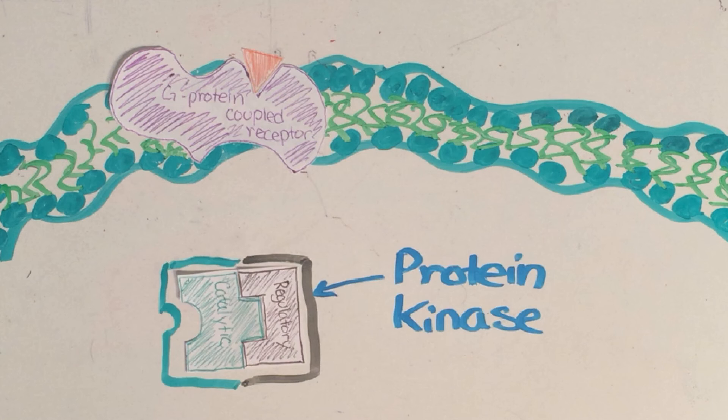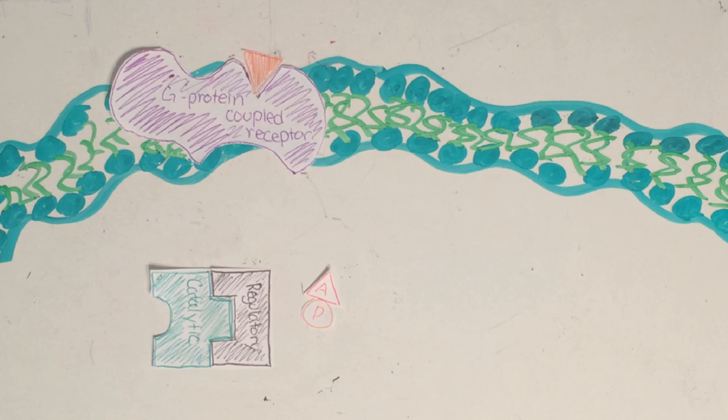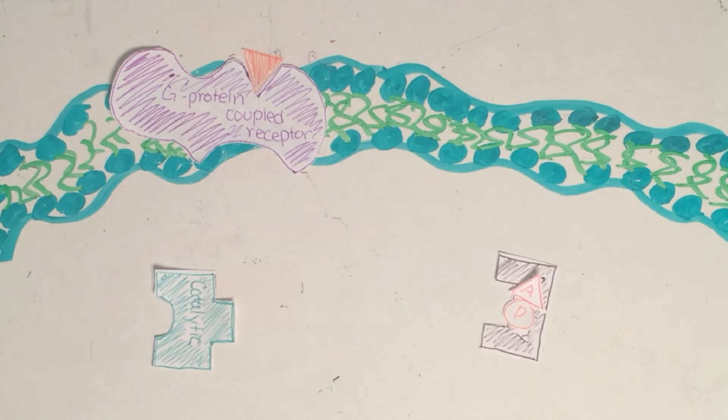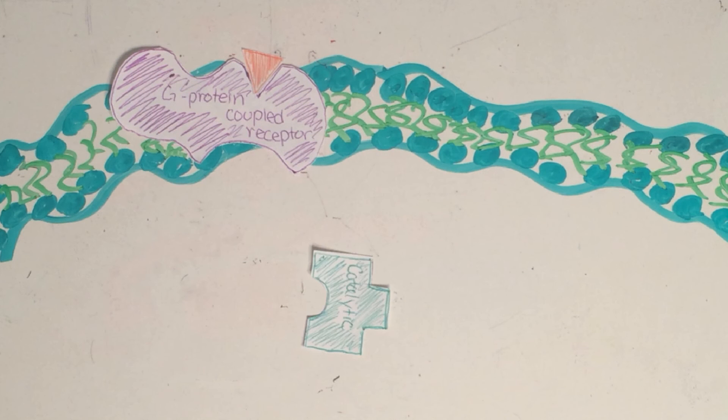The regulatory protein stops the catalytic protein from working. The cyclic AMP binds to this regulatory part to separate it from the catalytic protein.